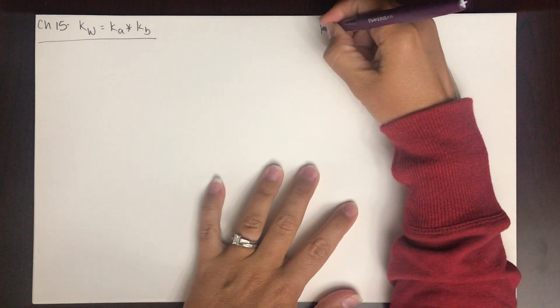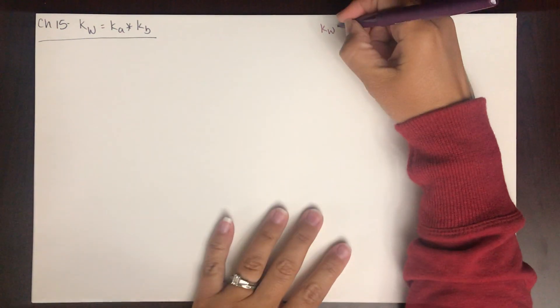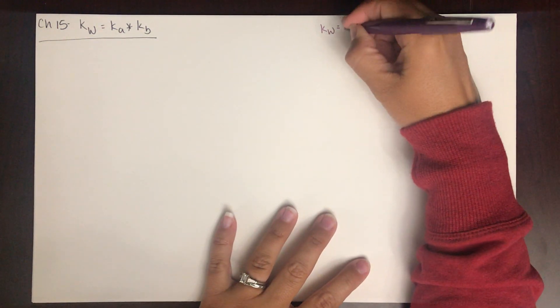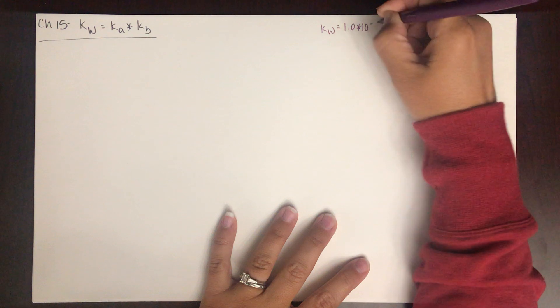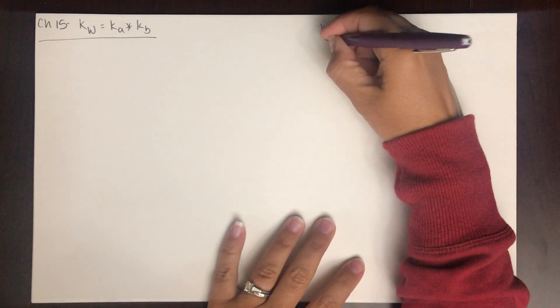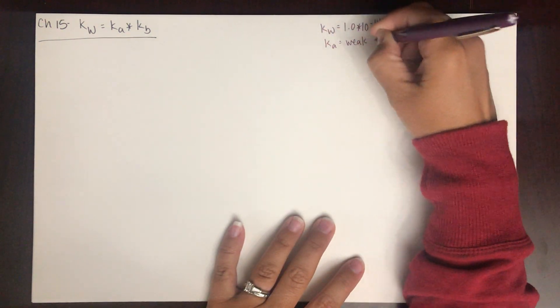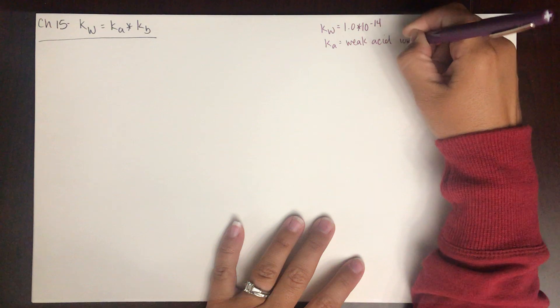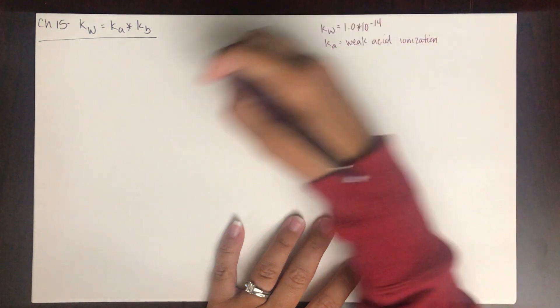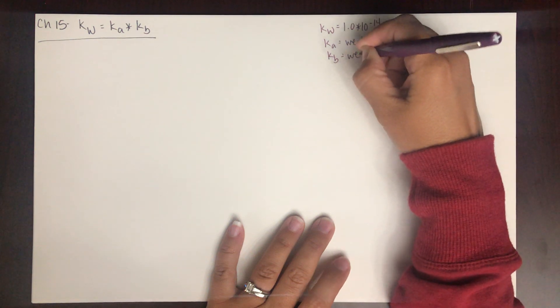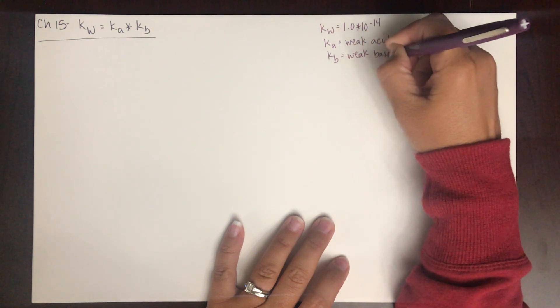We're going to look at a relationship between the KW, the Ka, and the KB. Let's take a second to remind ourselves what all these things are. The KW is the autoionization constant of water — it's 1.0 times 10 to the negative 14th. This is also the product of the Ka, which is the weak acid ionization, times the KB, which is the weak base ionization.